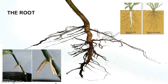Let's begin with the root. In majority of dicotyledonous plants, the direct elongation of the radicle results in the formation of a primary root which grows inside the soil and it bears lateral roots. These are of several orders and they are referred to as secondary, tertiary roots, etc. The primary root and its branches constitute the tap root system, as seen in the mustard plant.